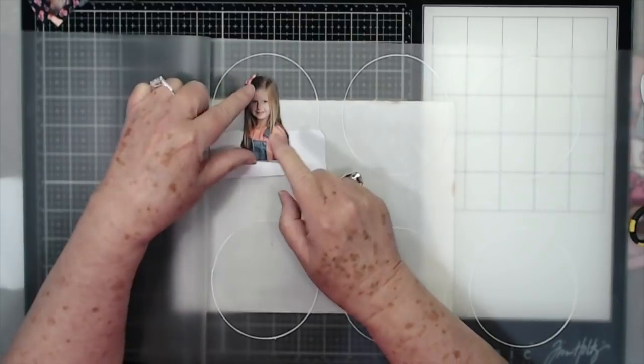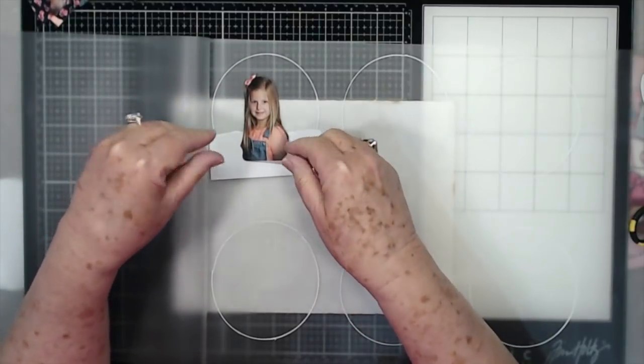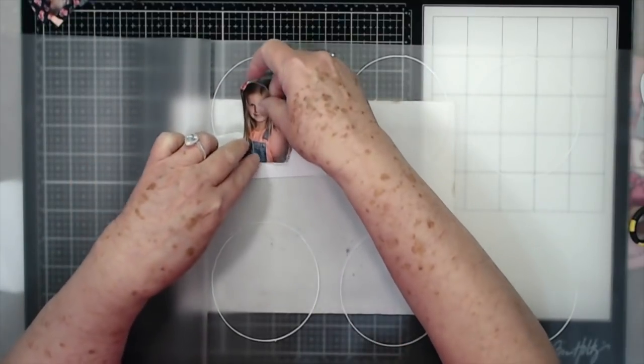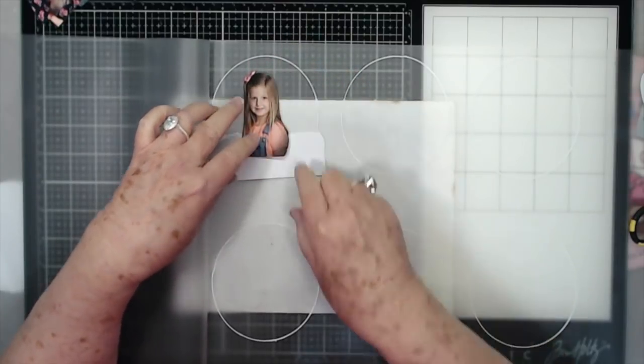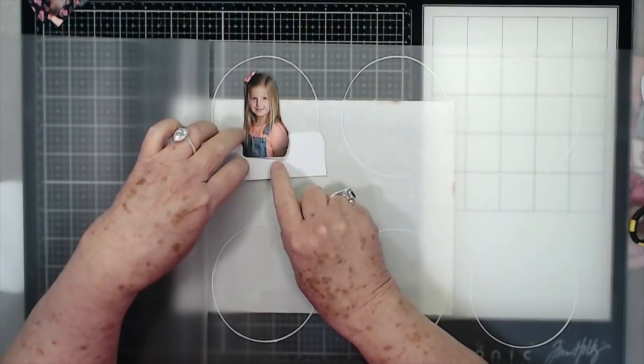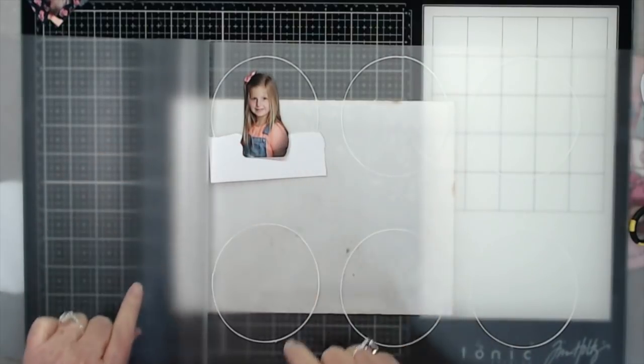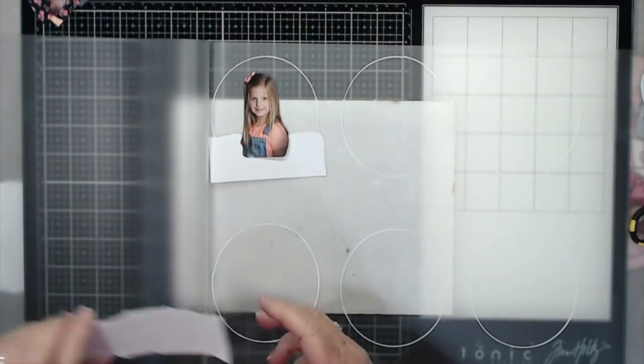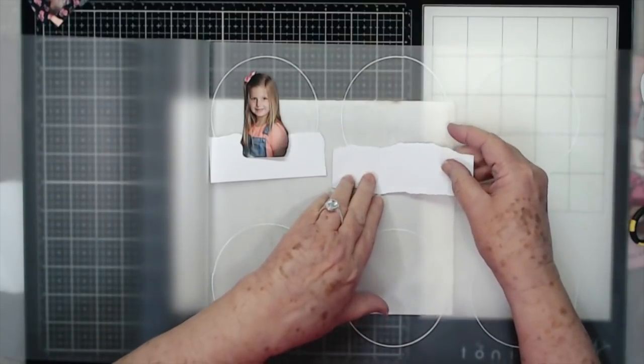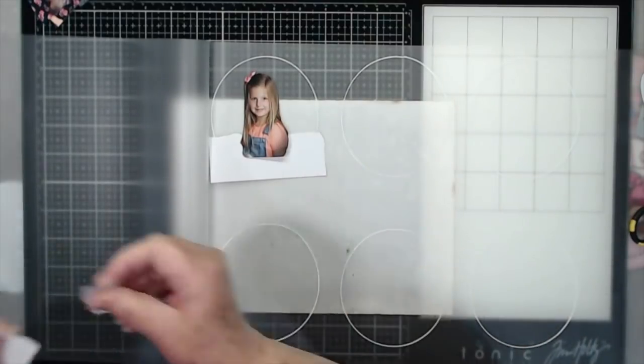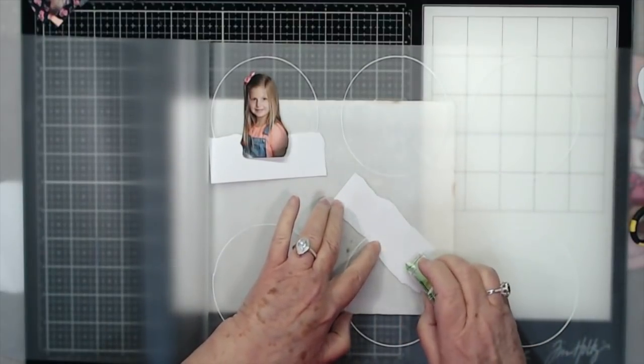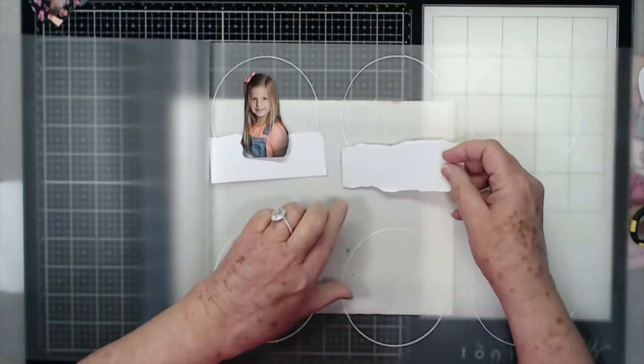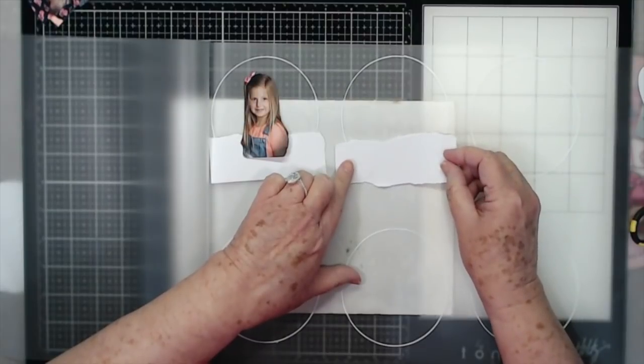Now what she did was she painted on hers, but I can't for some reason find my white paint—don't know what I've done with it. But anyway, we're just going to use this, and I've got different photos. She had some photos where it looked like they were standing in the snow. I don't have those exactly, so we're just going to use what we have. I just printed my photos out and then trimmed around them.